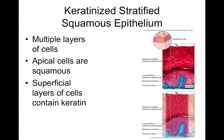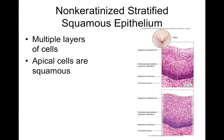Non-keratinized stratified squamous epithelium is found in mucous membranes — the oral cavity, anal cavity, and vaginal cavity. Because it lacks keratin, it is not waterproof. You can actually absorb some water through your mouth. Water can also go the other direction — crossing the epithelium into the cavity — which is what makes these mucous-type cavities. Without keratin, water can move in either direction by osmosis.